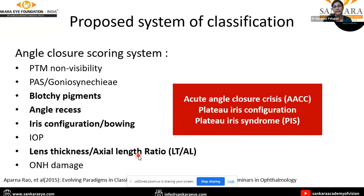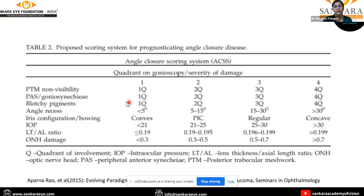This classification helps in prognosticating the disease and gives a separate entity for acute angle closure crisis — defined as an occludable angle with symptomatic high IOP. Plateau iris configuration is defined as an occludable angle with central deep anterior chamber, and plateau iris syndrome is the plateau iris configuration with central deep AC and occludability even present with a patent peripheral iridotomy. This is a grading and scoring system based on the quadrant observed by gonioscopy and severity of damage across various parameters.